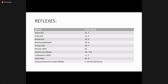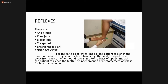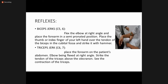For reinforcement of lower limb reflexes, ask the patient to clench hands, hook the fingers of both hands together, and pull them apart without disengaging. For upper limb reflexes, ask the patient to clench the teeth. This reinforcement phenomenon lasts less than a second. For the biceps reflex, flex the elbow at a right angle, place the forearm in semi-pronated position, place your thumb and index finger over the biceps tendon in the cubital fossa, and strike it with the hammer.